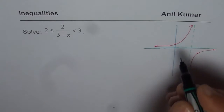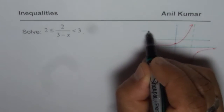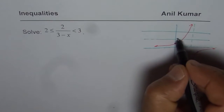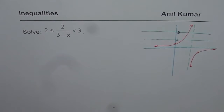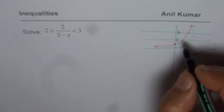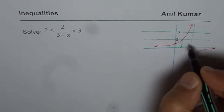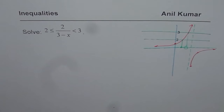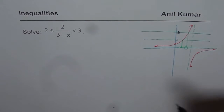Now, when we say this function should be between 2 and 3, we draw the horizontal lines y = 2 and y = 3. The part of the graph lying between these two lines is the solution region. Where the function equals 2, that point is included; where it equals 3, it is not included (open boundary).